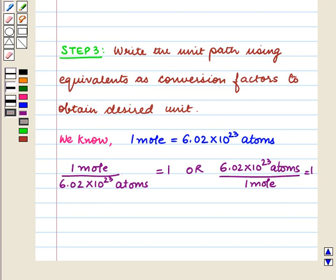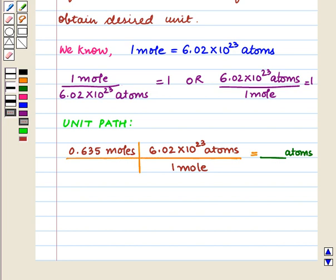We will choose those conversion factors so that the initial unit cancels out and we are left with the desired unit that is atoms. So we have the following unit path.